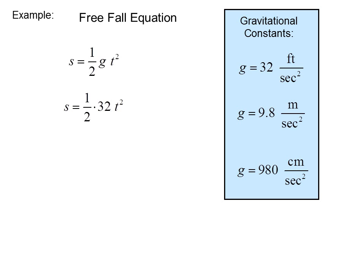S equals one-half times 32 T squared would give us S equals 16 T squared. That's if we use 32 as the gravitational constant. Velocity, then, is dS dt, or 32 T.